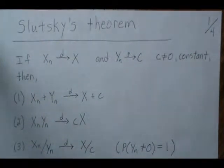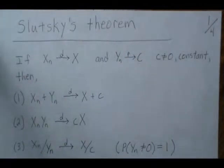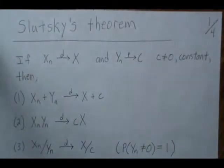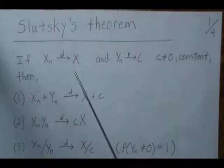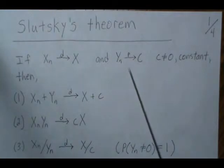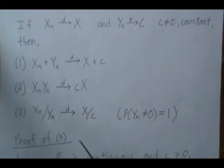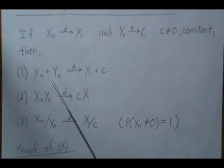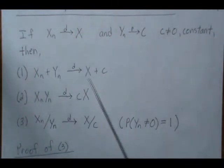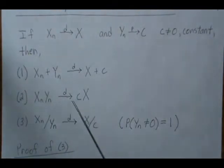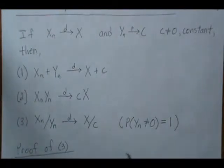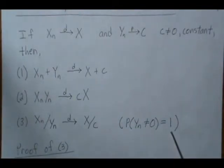This is video 10 in a mini-series called basic limit theorems. We're going to look at Slutsky's theorem, which states that if Xn converges in distribution to X and Yn converges in probability to a constant C not equal to zero, then the following hold: the sum converges in distribution, the product converges in distribution, and the ratio converges in distribution, where we assume the probability that Yn is not equal to zero is one.